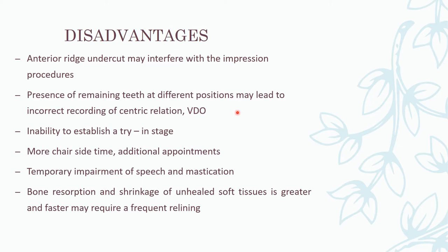Presence of remaining teeth at different positions is frequently seen in patients with different occlusions, mobilities, and levels of attachment loss, and may lead to incorrect recording of centric relation. Inability to establish a try-in stage is another contraindication, as it is very hard to establish. Additional contraindications include: more chair-side time and additional appointments, temporary impairment of speech and mastication initially, and bone resorption with shrinkage of unhealed soft tissues, which is greater and faster, requiring frequent relining.